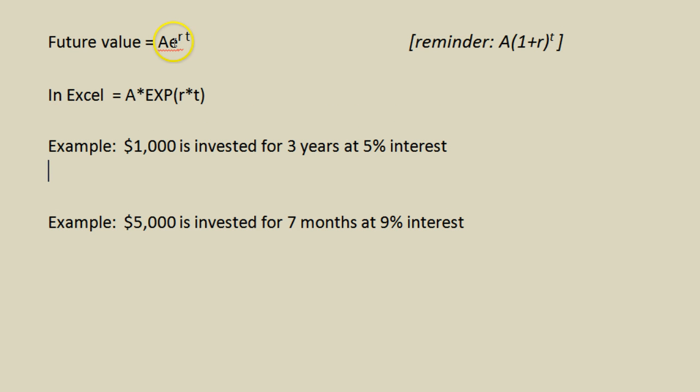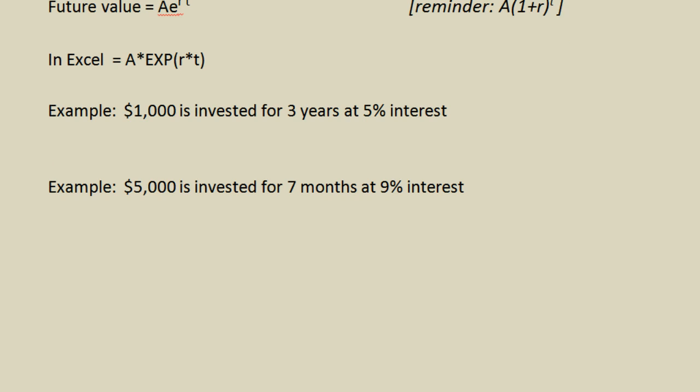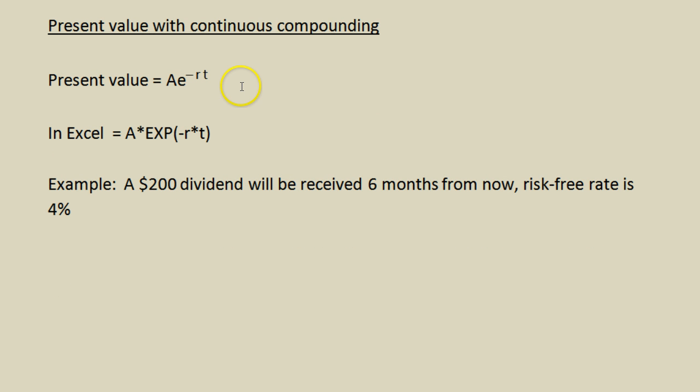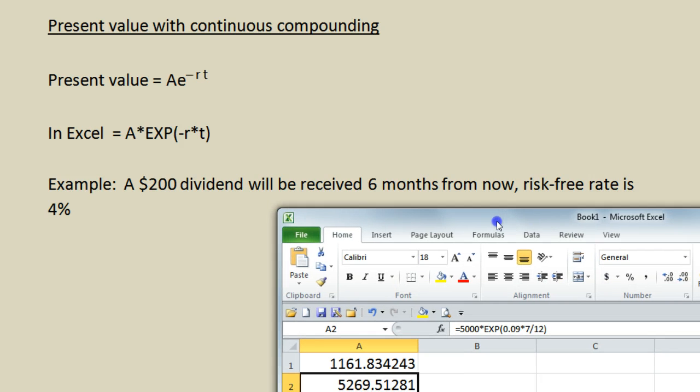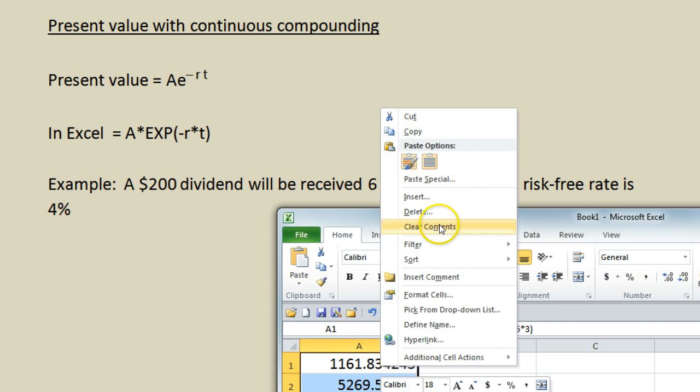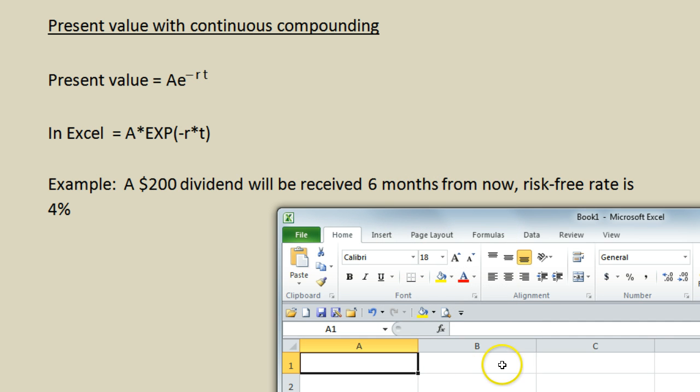Now discounting it back to present value, it is precisely the same procedure except that instead of the equation being e to the rt it is e to the negative rt and in Excel again it's exactly the same except we just need to throw a negative sign in there. And to do an example here it says a $200 dividend will be received six months from now when the risk-free interest rate is four percent which again we're going to assume is continuously compounded.